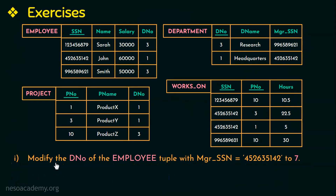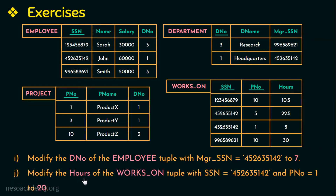The remaining operations are: modify the D-number of the employee tuple with manager SSN = 452635142 to the value 7; and modify the hours of the works-on tuple with SSN = 452635142 and P-number = 1 to the value 20. For all these update operations, you need to identify any integrity constraints that are violated and mention the different ways to enforce those violated constraints.